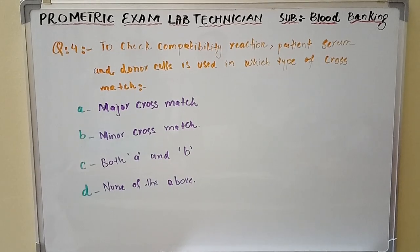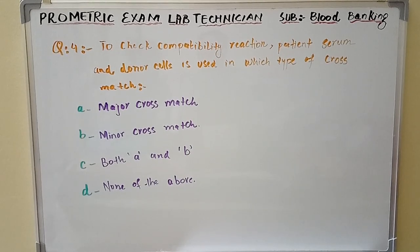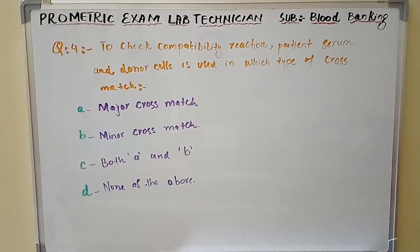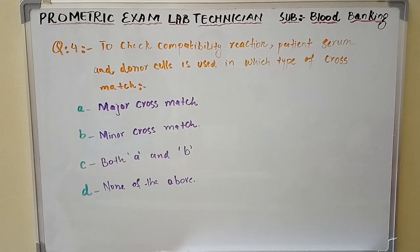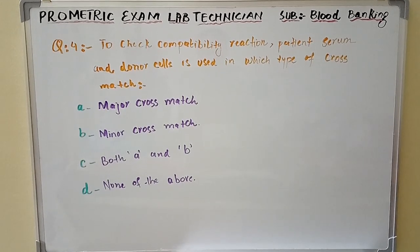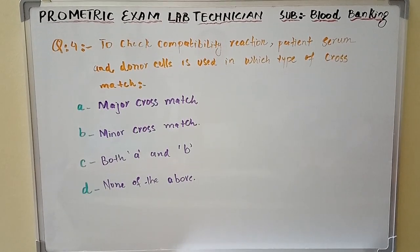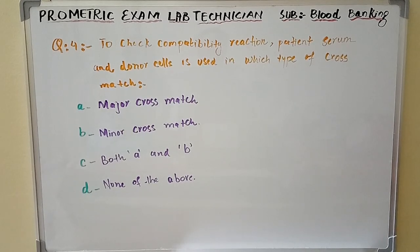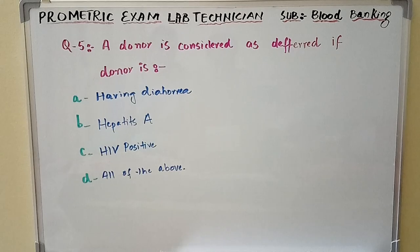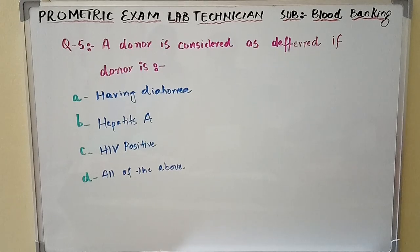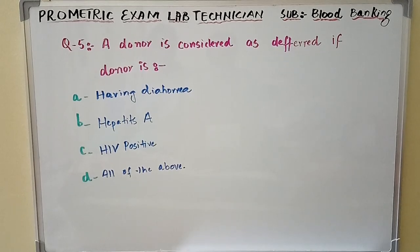Option A: major cross match. Option B: minor cross match. Option C: both A and B. Option D: none of the above. Question number five: A donor is considered as deferred if the donor is?